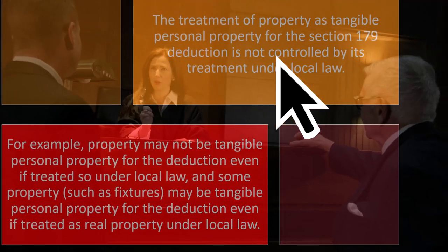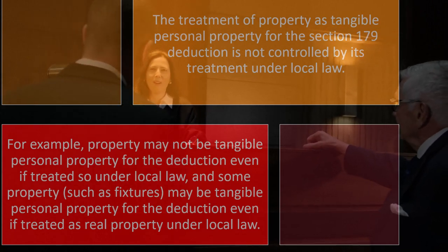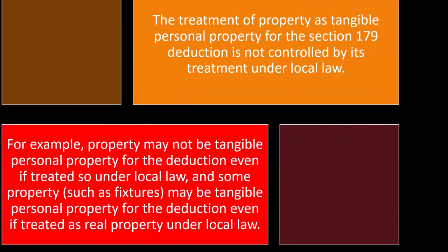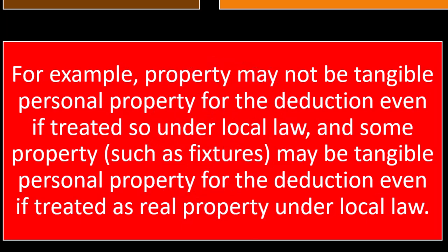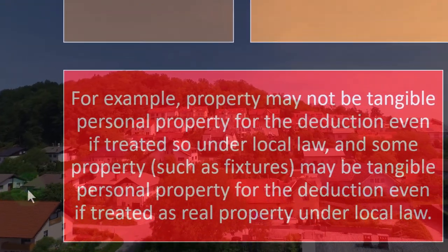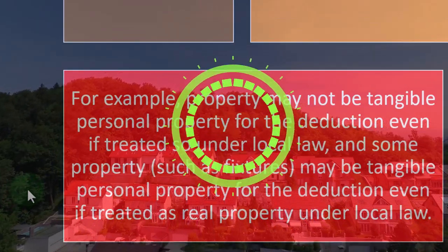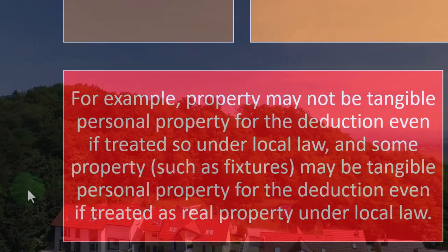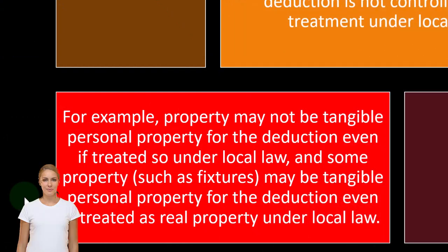For example, property may not be tangible personal property for the deduction even if treated so under local law. Sometimes when you look at these terminologies, it goes to the state in terms of what the law is. For example, with community property states versus non-community property states regarding marriage, you go to state law. But the federal government may not allow the state and locality to simply change the definition of something, which could change how something would be treated in one state or locality versus another.